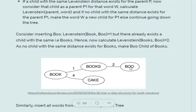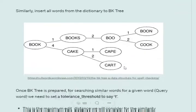So 'boo' first goes to 'book'. They have a Levenshtein distance of 1. As 1 already exists as a child, it goes to that child which has the same distance. We then calculate the Levenshtein distance with 'books' and eventually create a new child 'boo'. Similarly, we go through all words in the dictionary and create the full tree.